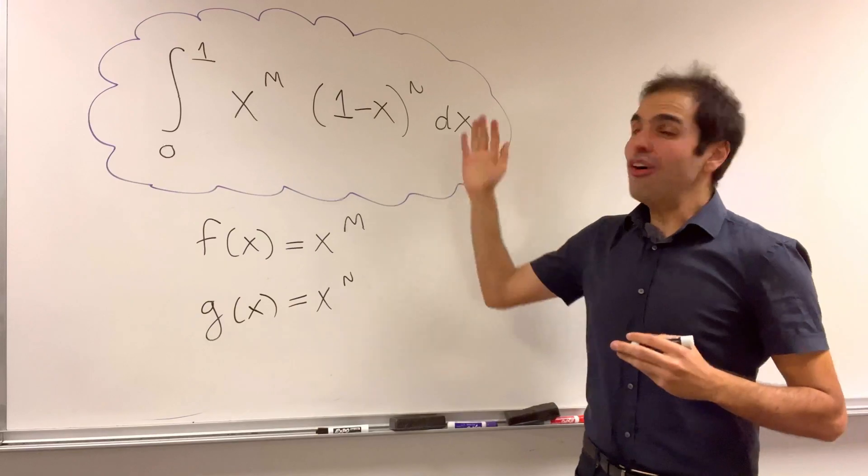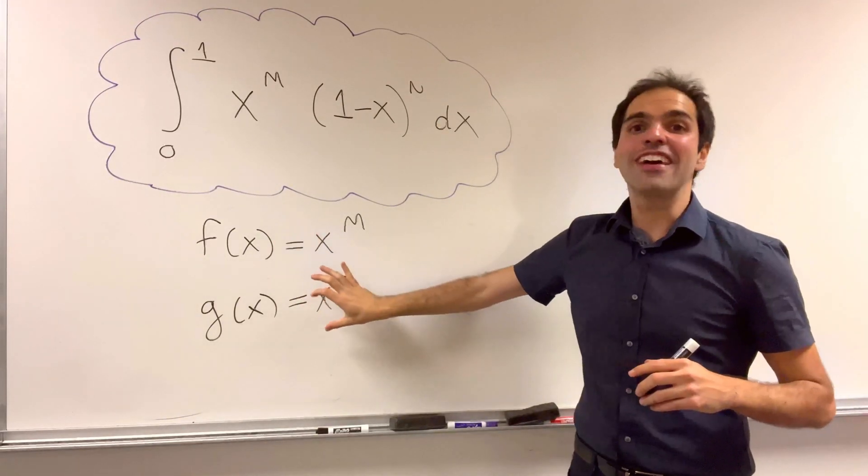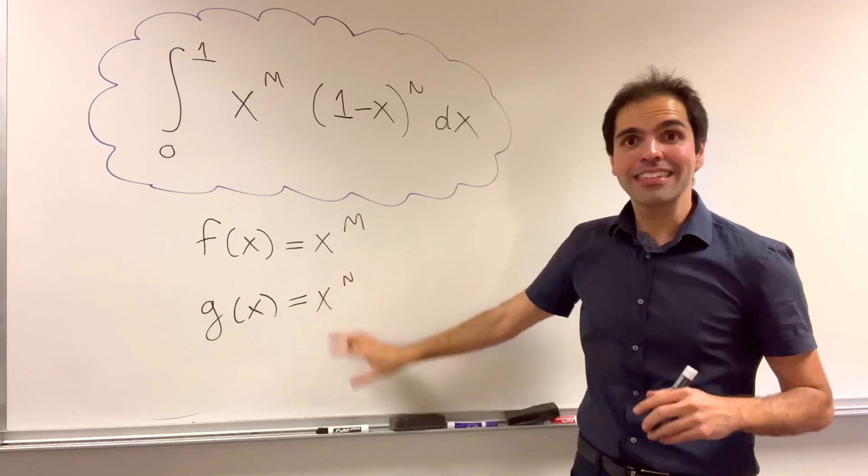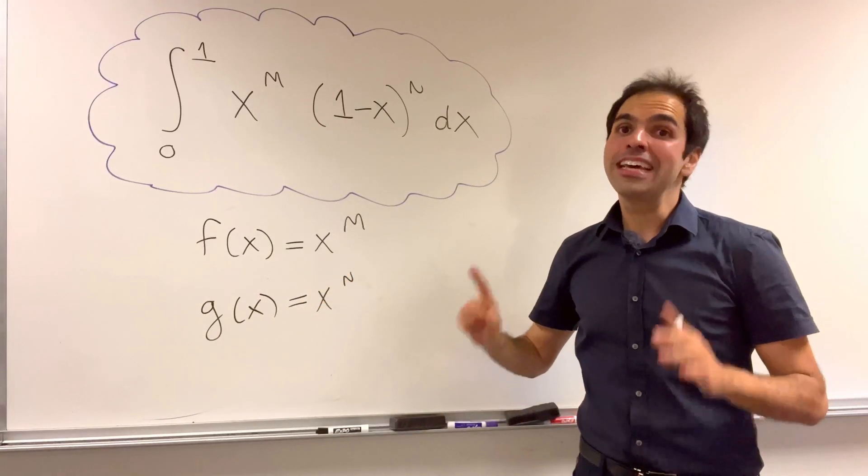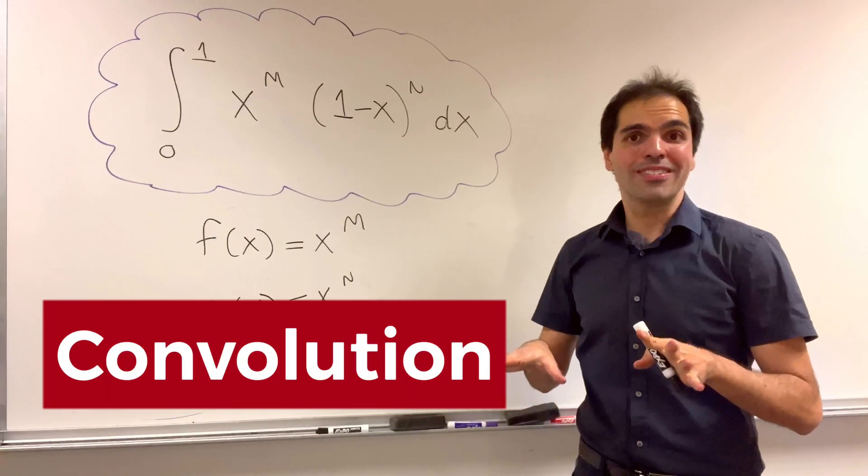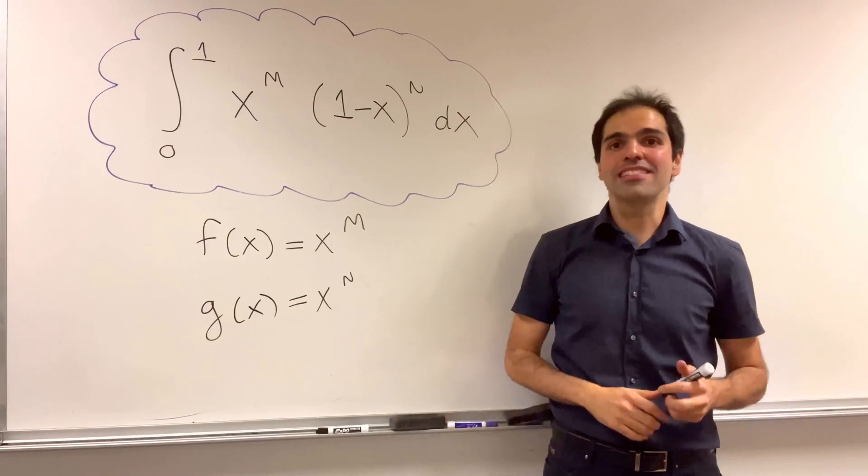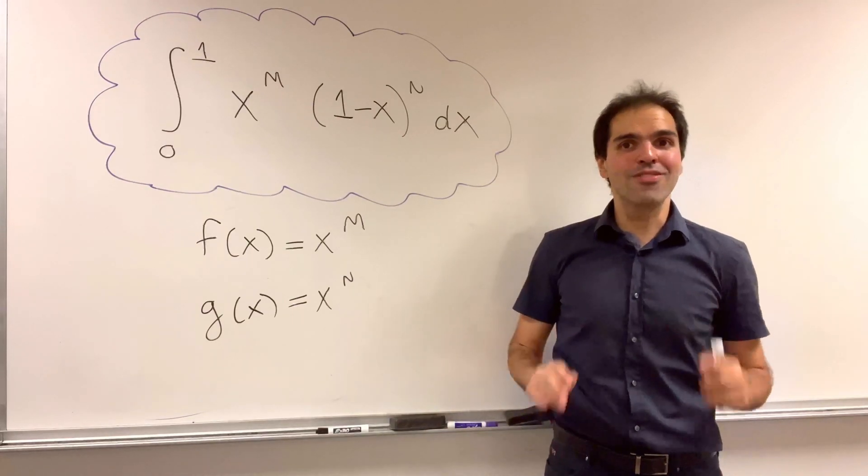Now, of course, this integral is not f of x times g of x, but it turns out it is true in terms of convolutions. So let's try to convolve f and g, which is a fancy way of multiplying, and see what we get.